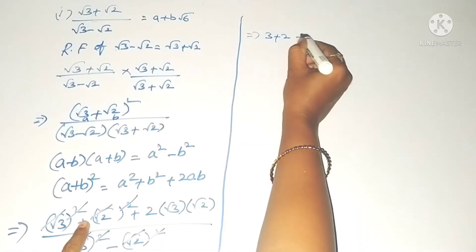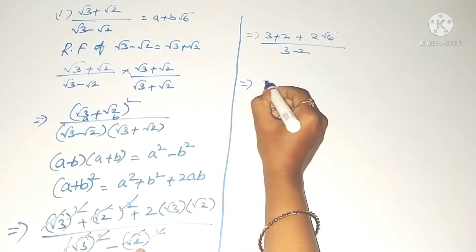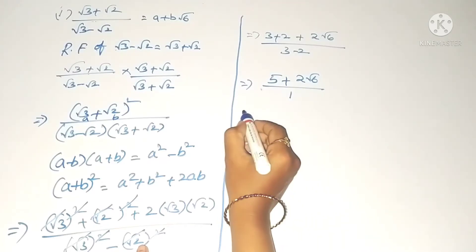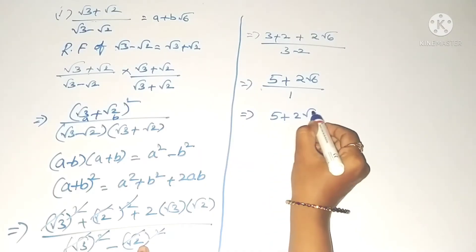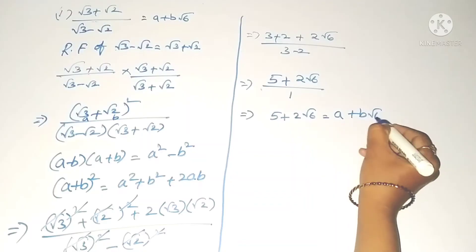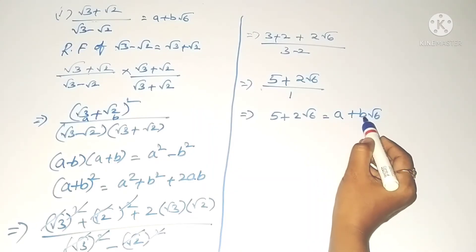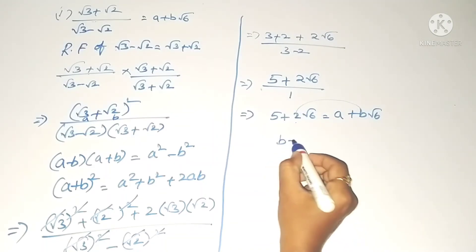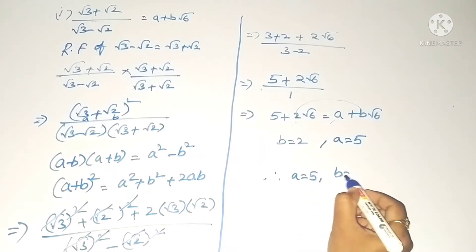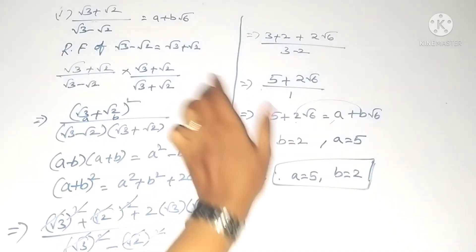The numerator gives 3 + 2 + 2√6 = 5 + 2√6, and the denominator gives 3 − 2 = 1. So we get 5 + 2√6. Equating this with a + b√6, the coefficient of √6 gives b = 2 and the constant gives a = 5. Therefore a = 5 and b = 2.